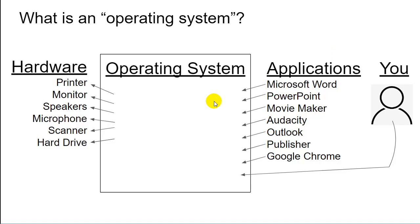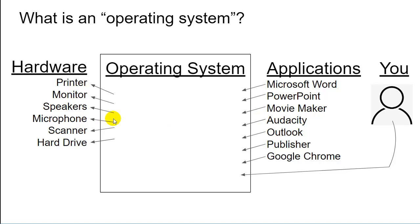Your applications talk to the operating system, and the operating system talks to the hardware. All these applications want to do things to the hardware: Microsoft Word wants to print, PowerPoint wants to show up on the monitor, Movie Maker wants the speakers to play music, Audacity wants the microphone to listen. Even you can talk directly to the operating system — when you change the desktop background or make a desktop shortcut, you are talking directly to the operating system.